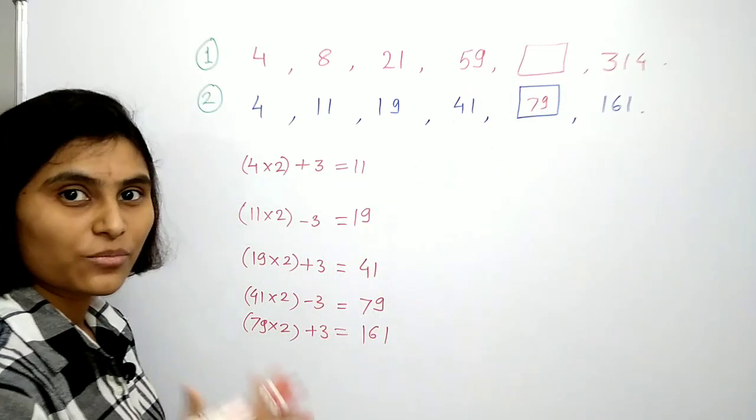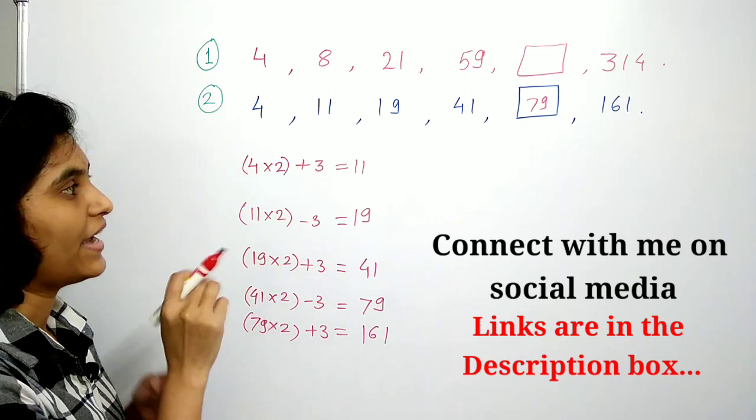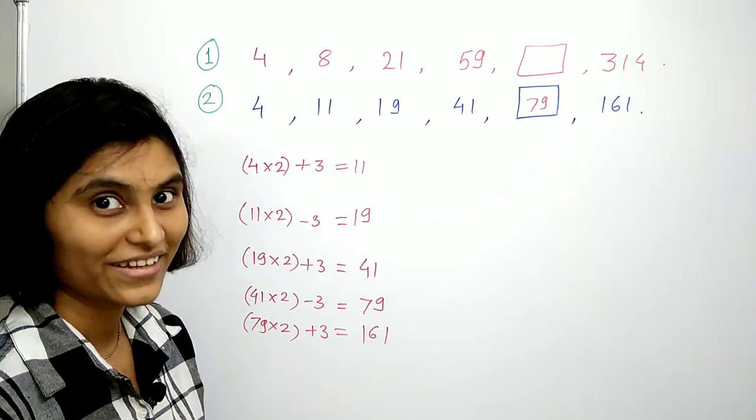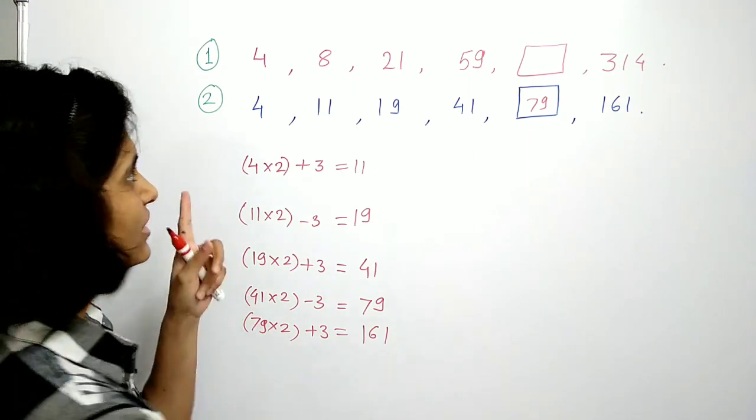So what is the pattern? We are taking just multiplication by 2, and we are adding and subtracting 3 alternatively. I hope you got the idea. Don't forget to tell me your answer. Now let us look at the first puzzle.